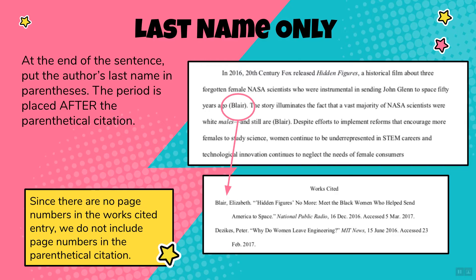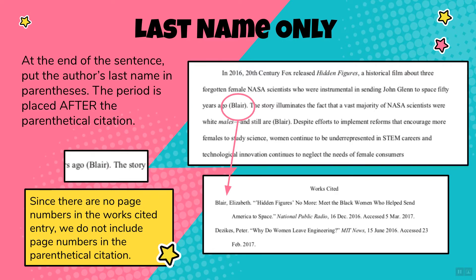Also notice the formatting of the parenthetical citation. There's a space between the end of the sentence and the parenthetical citation. There is no punctuation within the parenthetical citation, and the period is placed immediately after the parenthetical citation.